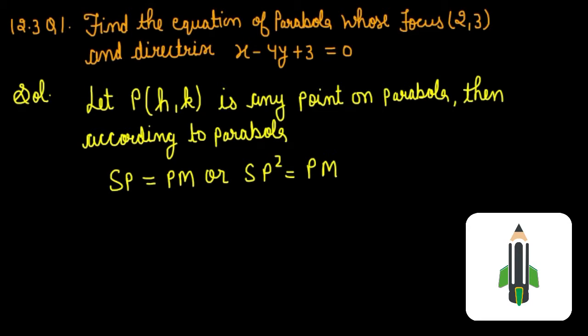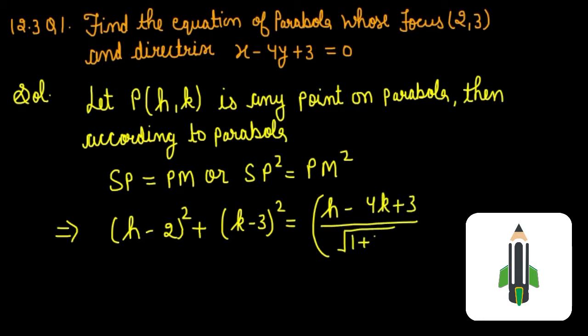Now we are applying the formula. (h - 2)² + (k - 3)² = (h - 4k + 3)² / (√(1 + 16))².